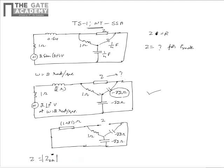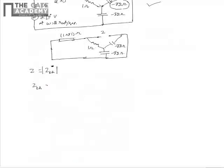Now we see that the Zth can be written as 1 plus j1 in parallel with 1 minus j1. This is because of the reason that minus j2 in parallel with minus j2 boils down to 1 minus j1 which is in series with 1.